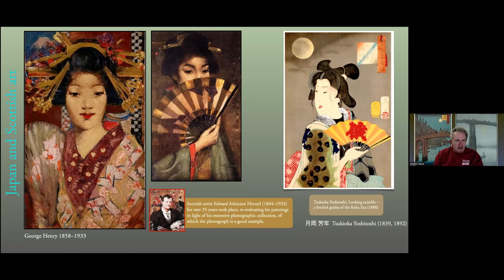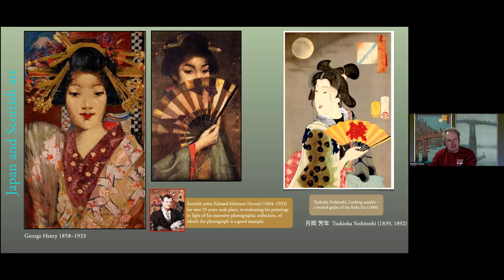George Henry, one of the Glasgow Boys, shows very directly how much they were influenced by these prints. Perhaps rather self-conscious, almost to a point of illustration rather than something innovative — unlike Van Gogh, Whistler, or Monet — a little more illustrative and self-conscious in some ways. But nonetheless, interesting of their type.